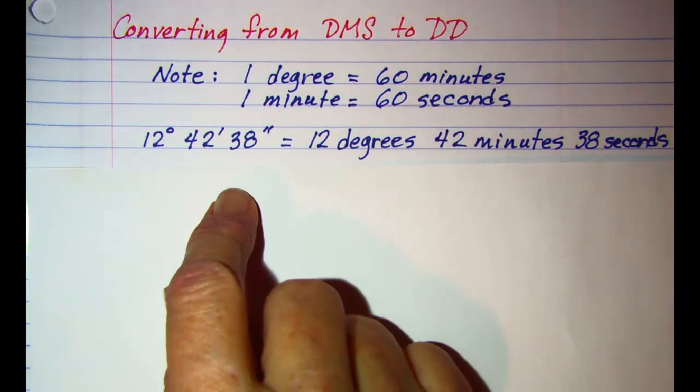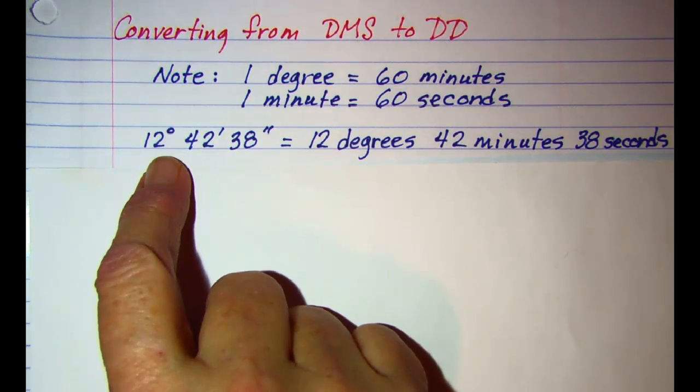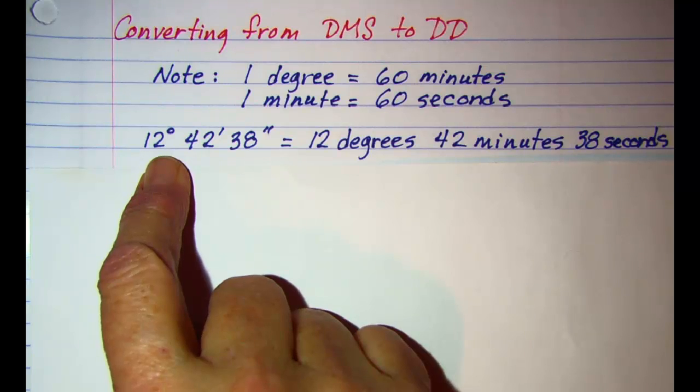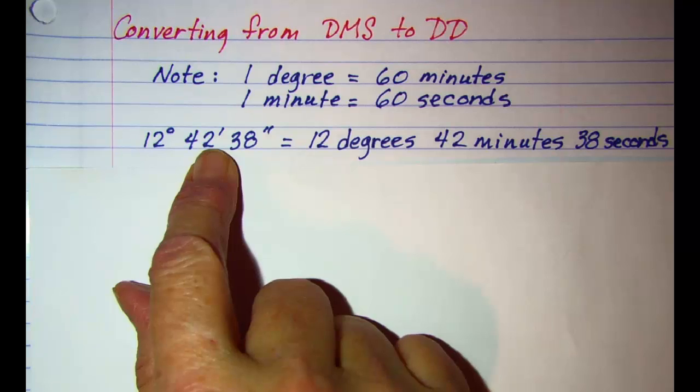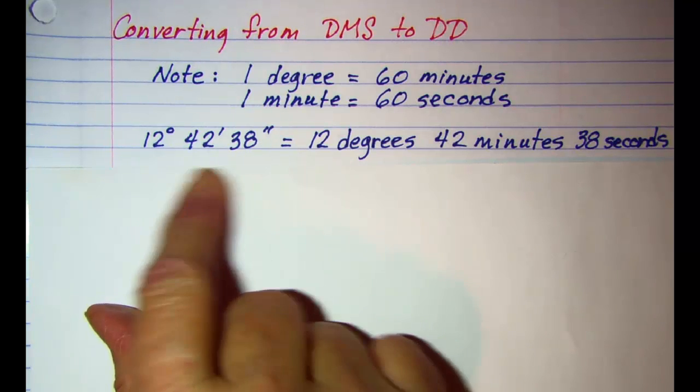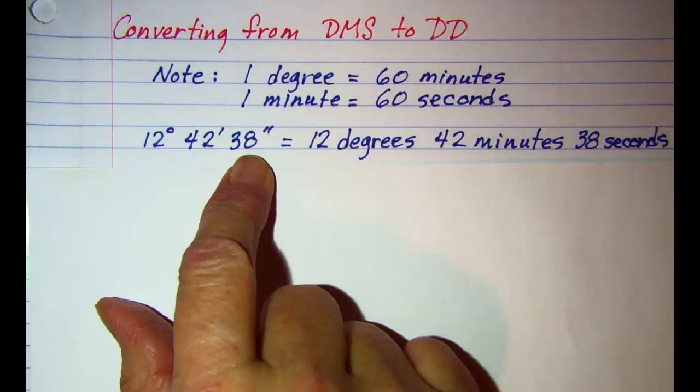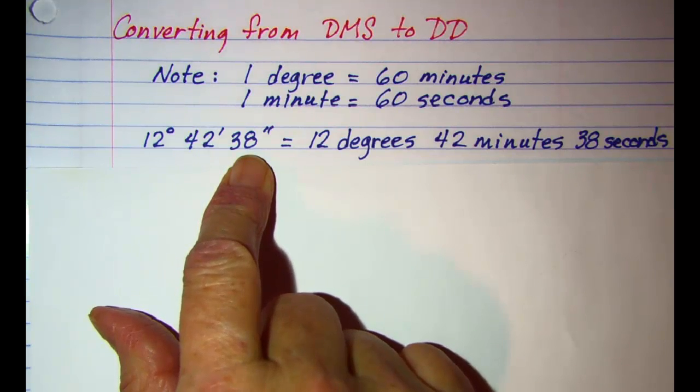The notation that we use, the superscript zero is degrees, one apostrophe is minutes, and two apostrophes is seconds. So this notation right here is 12 degrees, 42 minutes, 38 seconds.